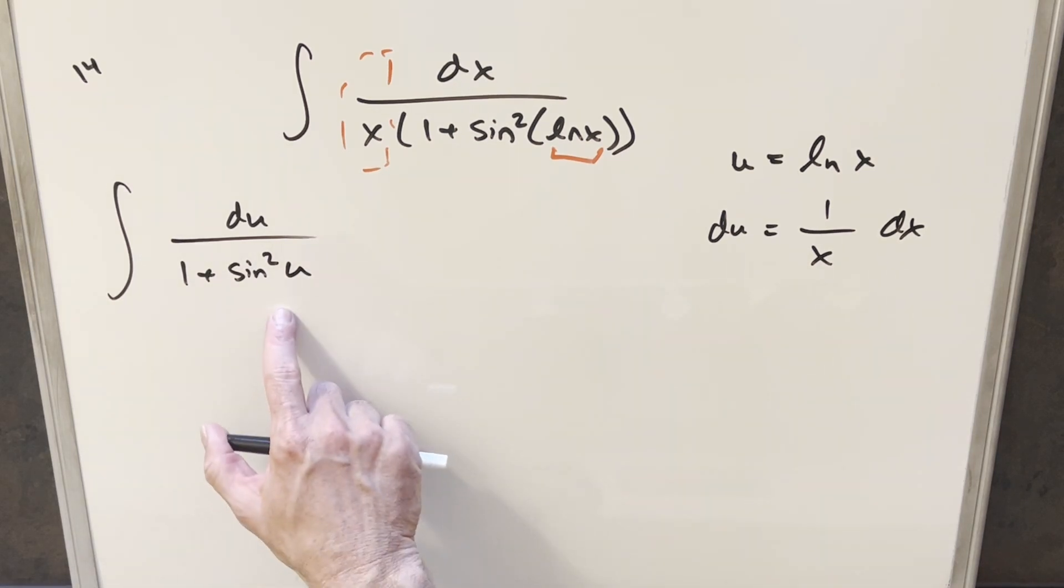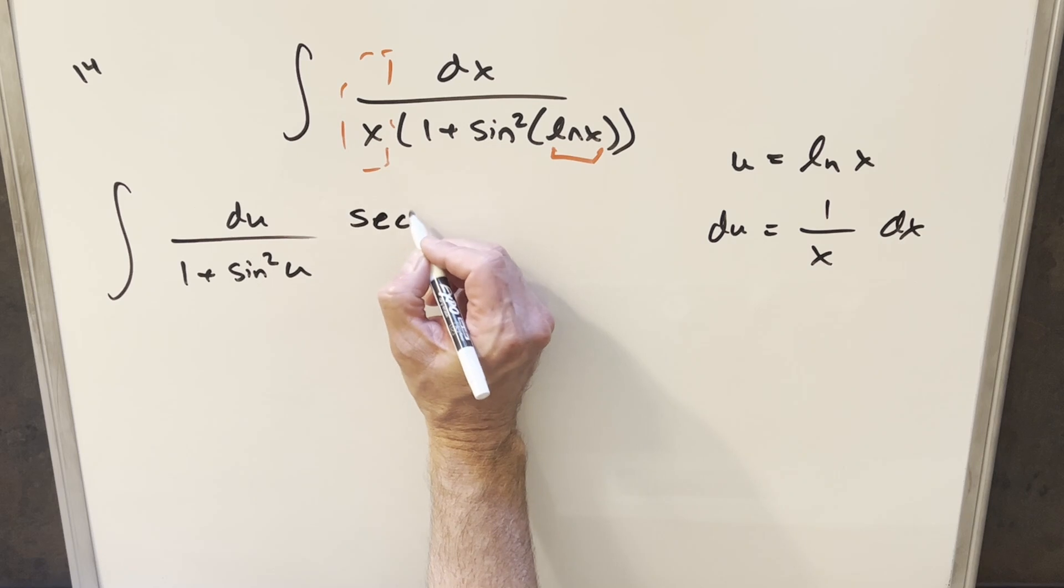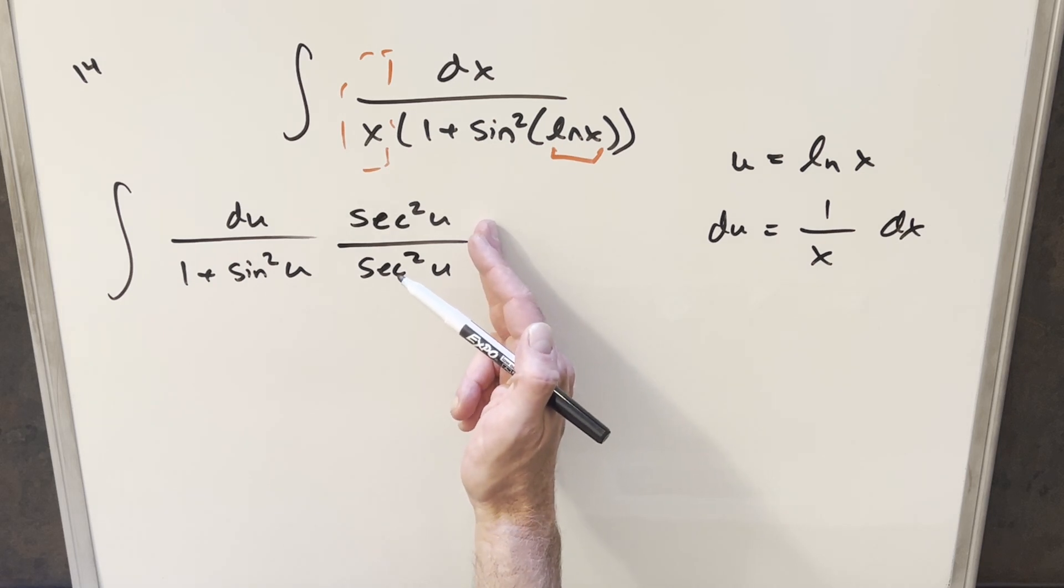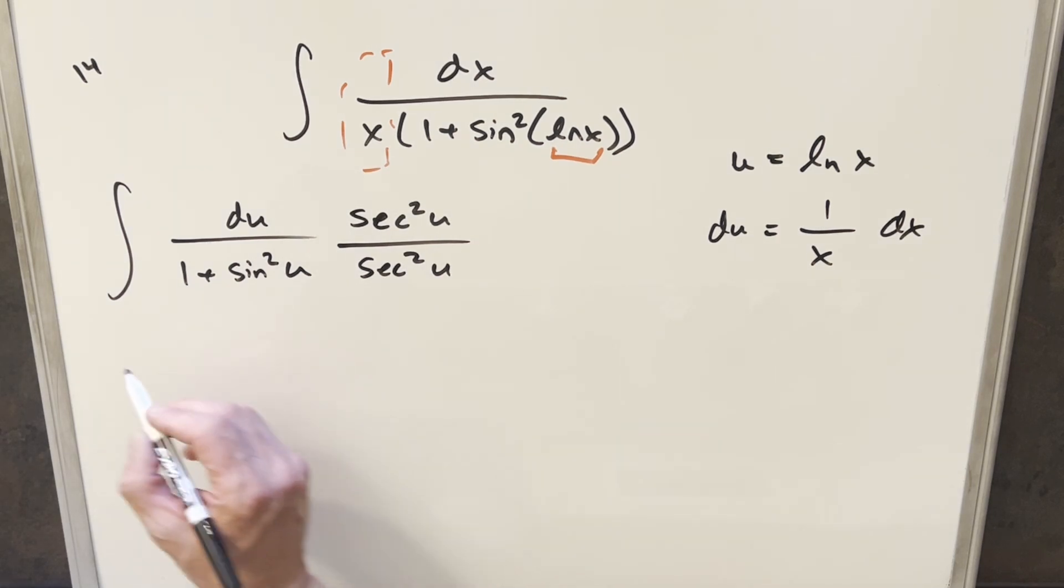And then now for this integral, there's probably a few different ways. The method I like for this is multiplying in secant squared of u in the numerator and denominator. This tends to work well to set up another substitution because we know that the derivative of tangent is going to be secant squared u.